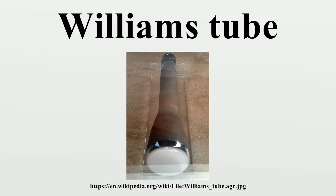The dot can be erased by drawing a second dot immediately next to the first one, thus filling the charge well. Most systems did this by drawing a short dash starting at the dot position, so that the extension of the dash erased the charge initially stored at the starting point. Information is read from the tube by means of a metal pickup plate that covers the face of the tube. Each time a dot is created or erased, the change in electrical charge induces a voltage pulse in the pickup plate.